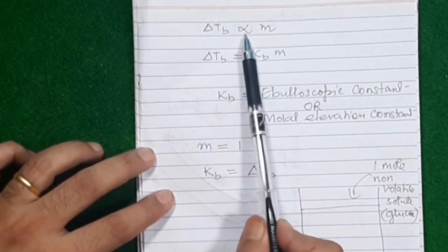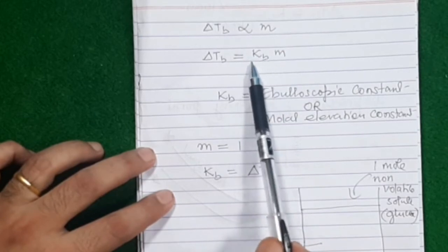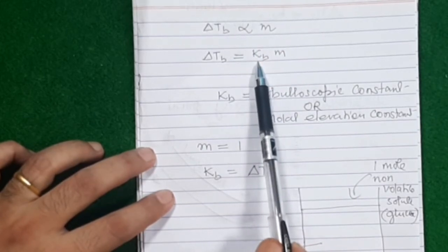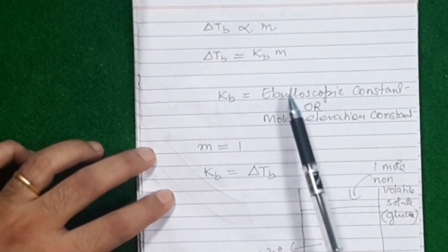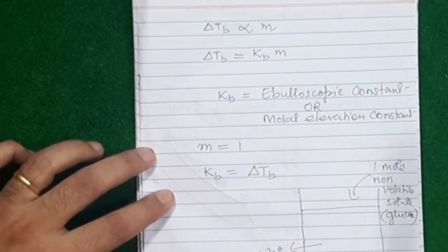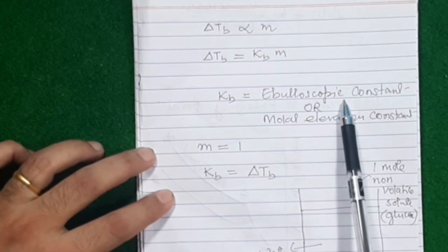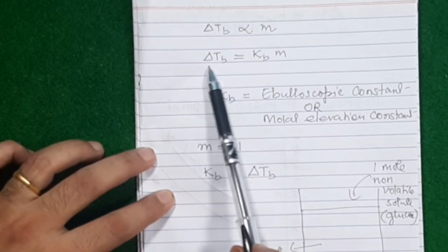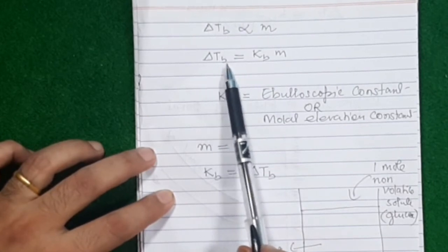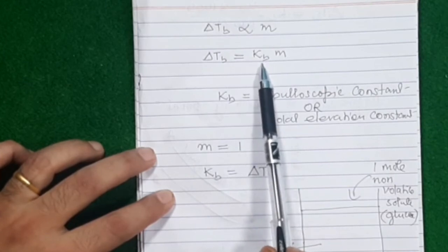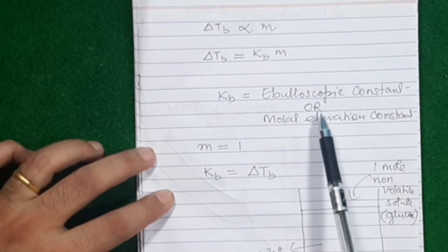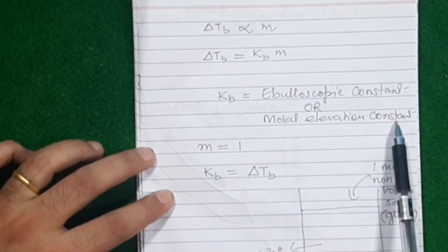When you change proportionality to equality, you put a constant. This constant is known as the ebullioscopic constant — or sometimes the molal elevation constant. It relates to the science of boiling or heating, which is why this constant in the expression of elevation of boiling point is named the ebullioscopic constant.